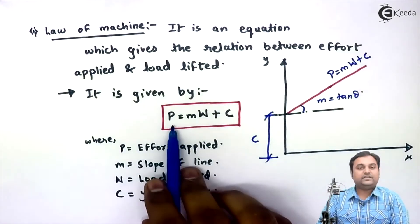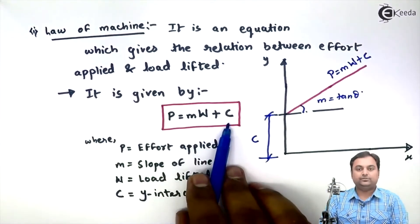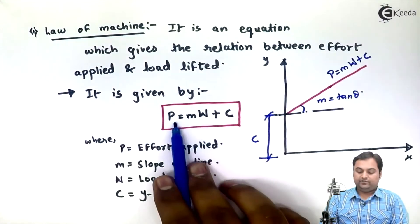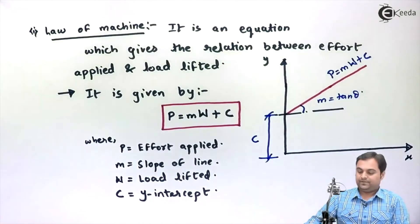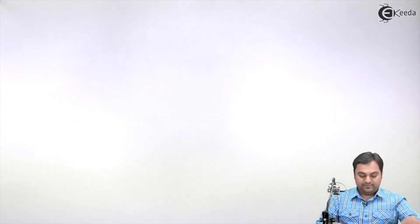As we can see from law of machine, if we know M and C values, out of load and effort, if any one value is given the other value can be calculated. The next definition is maximum mechanical advantage.